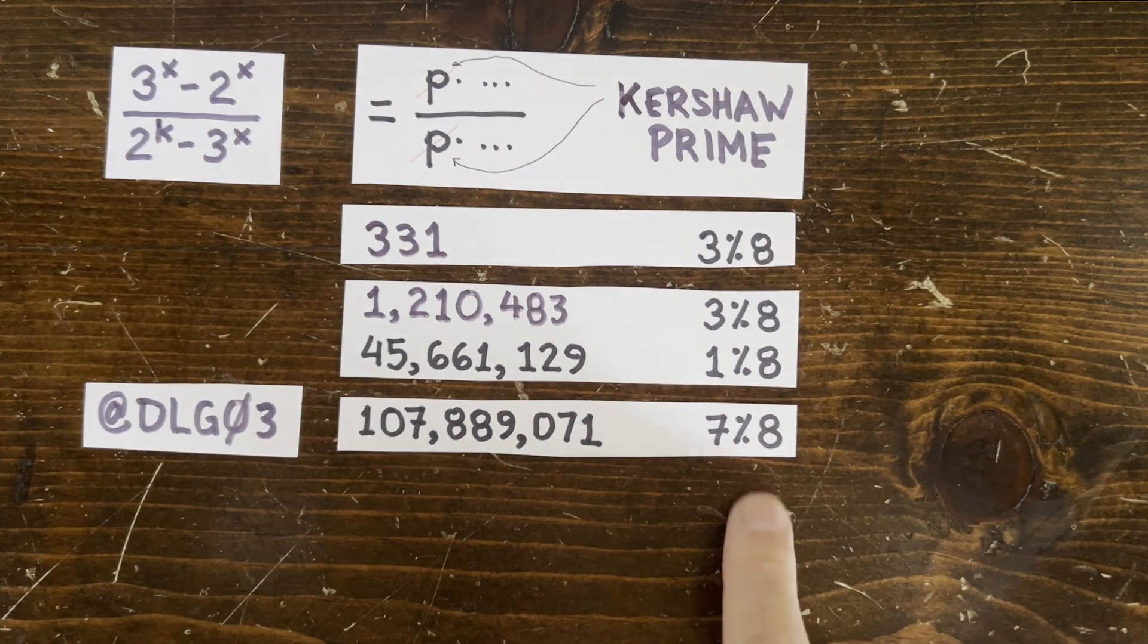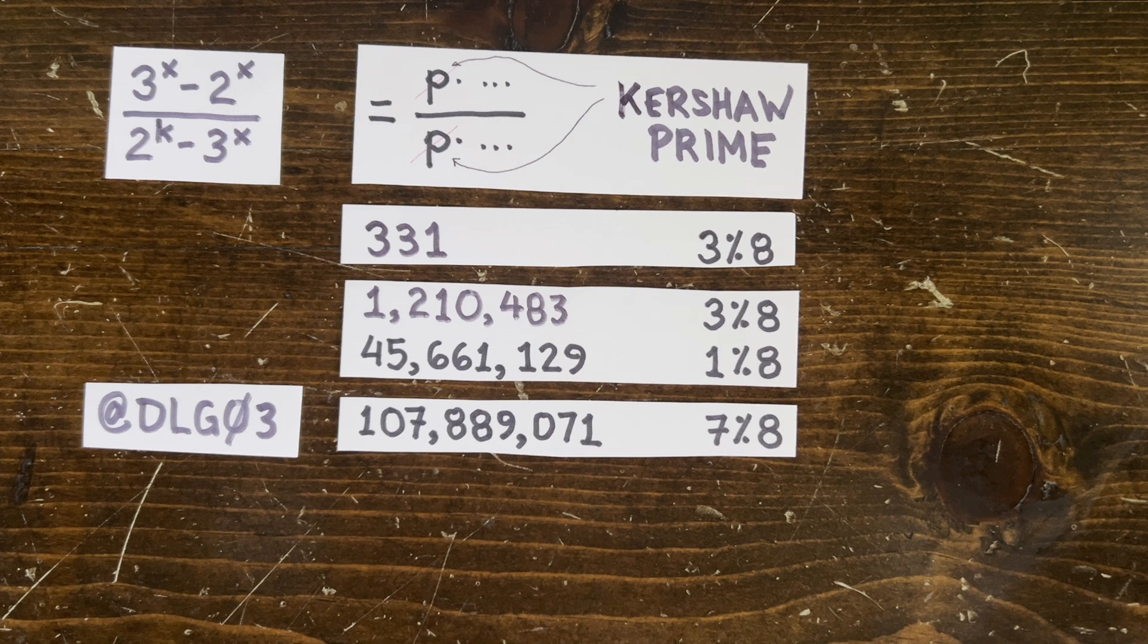And oops, it's 7 mod 8. So I guess having four examples of a concept is better than having three examples. Maybe there's some other way.